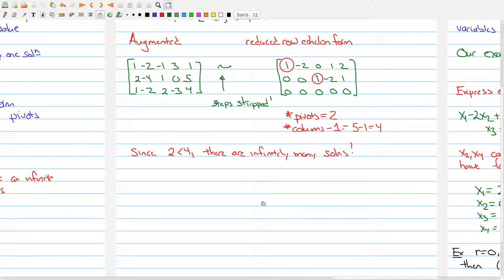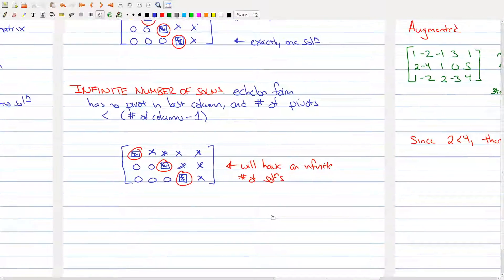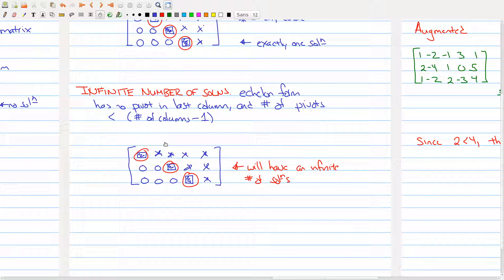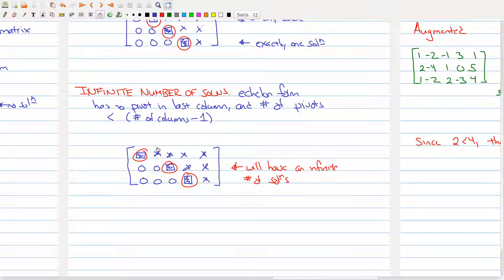So if we go back over here, really, when we have an infinite number of solutions, what's happening, what this is really trying to describe is that there's going to be a column, say for example, this column right here, that's going to correspond to a free variable. So this is a different way of expressing whether you have an infinite number of solutions or not.